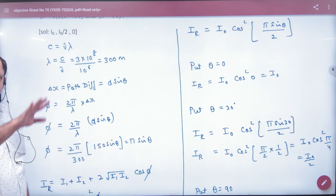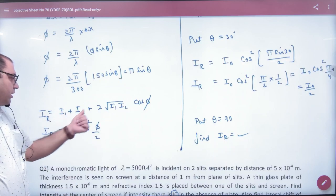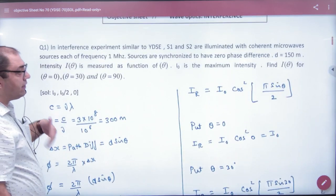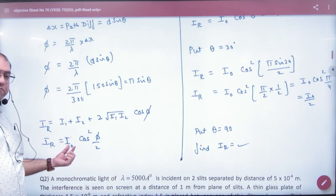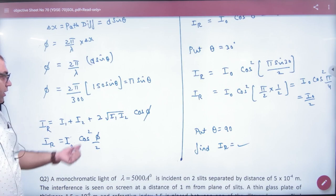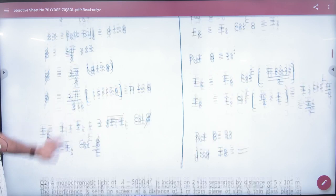But you have to use intensity in terms of theta, in the resultant intensity. I₀, I₀, what is it saying? The intensity I₀ is the maximum intensity. If I₀ is the maximum intensity, then we will put 4I₀. We will put this value here and put it here, the resultant intensity.